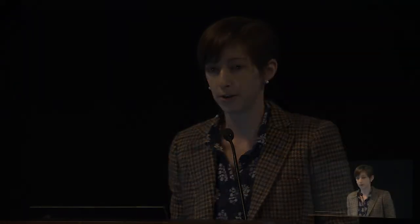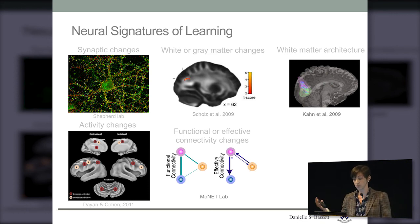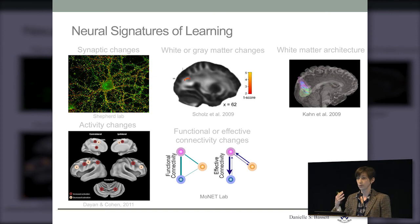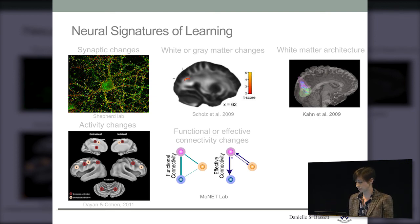If we think about neural signatures of learning, depending on who you're talking to, you might be thinking about synaptic changes, white or gray matter changes, white matter architecture that supports those changes, individual brain regions whose activity changes over time when somebody is learning, or changes in functional connectivity or effective connectivity that enable somebody to learn. So there are many different imaging modalities, different spatial and temporal scales that you might think about when considering neural signatures of learning.